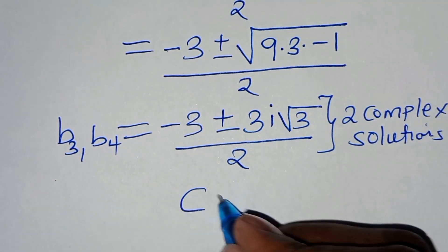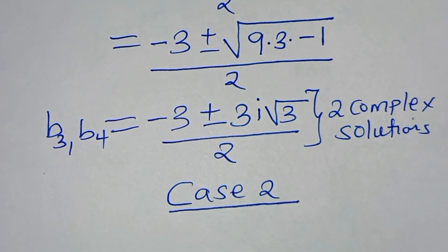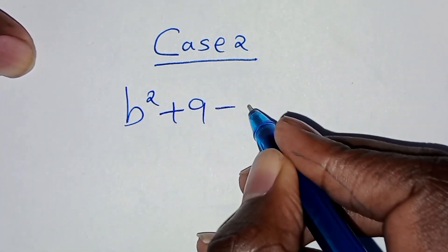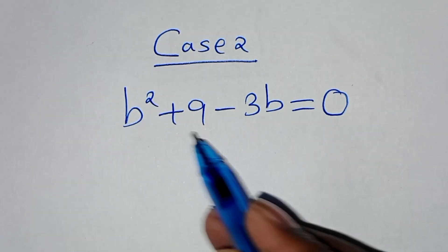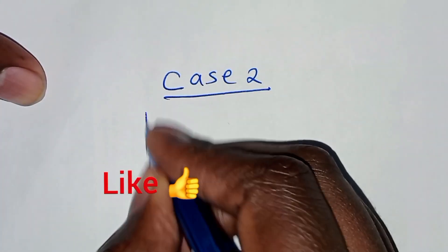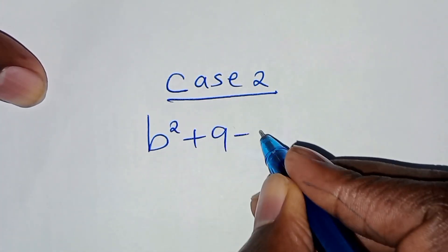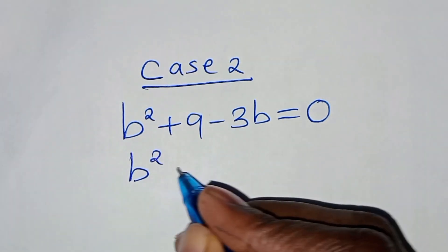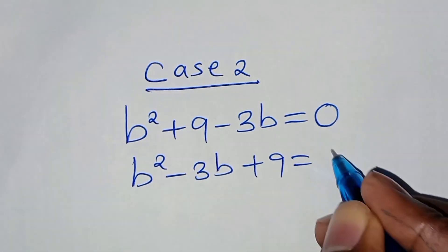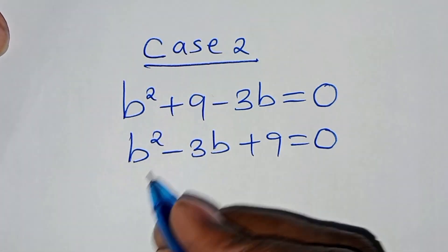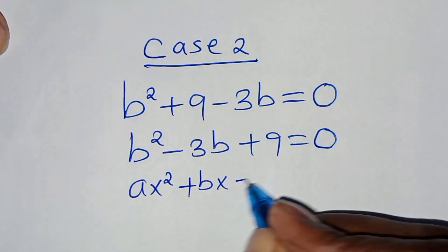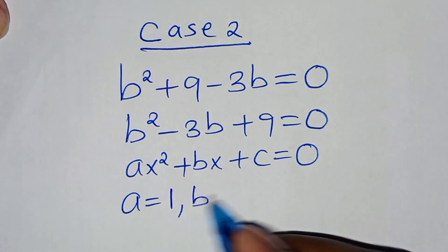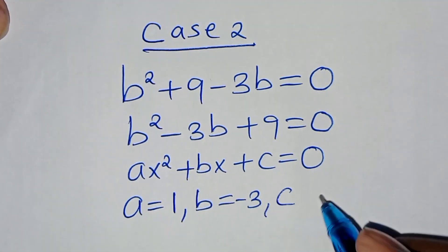Let's proceed to Case 2: b to power 2 plus 9 minus 3b equals 0, which rearranges to b squared minus 3b plus 9 equals 0. This is a quadratic of the form ax squared plus bx plus c equals 0, where a equals 1, b equals negative 3, and c equals 9. To solve for b5 and b6, we apply the quadratic formula: negative b plus or minus the square root of b squared minus 4 times a times c, divided by 2 times a.